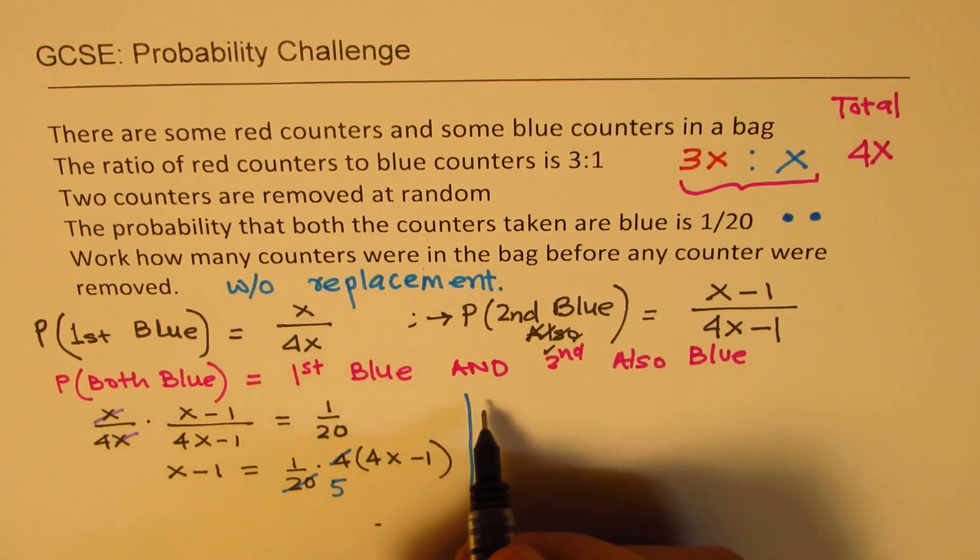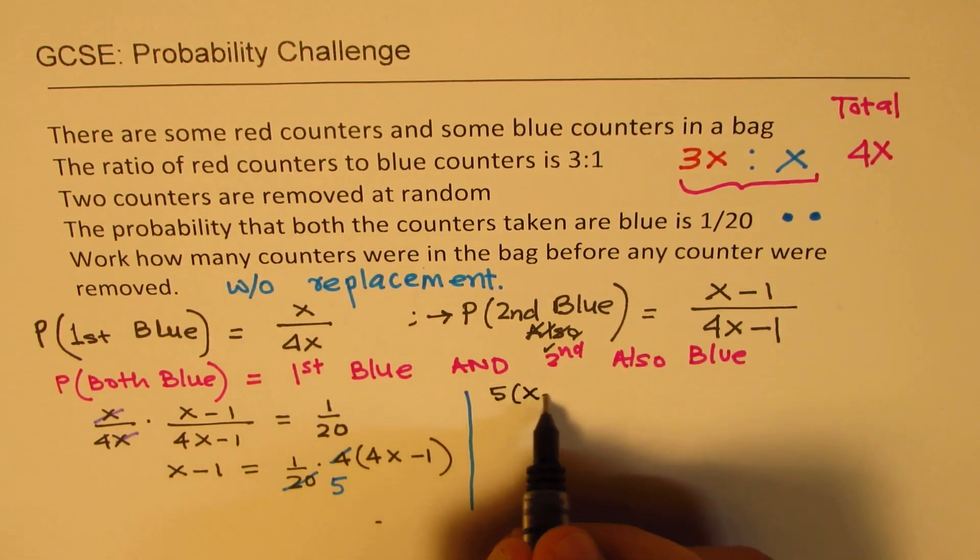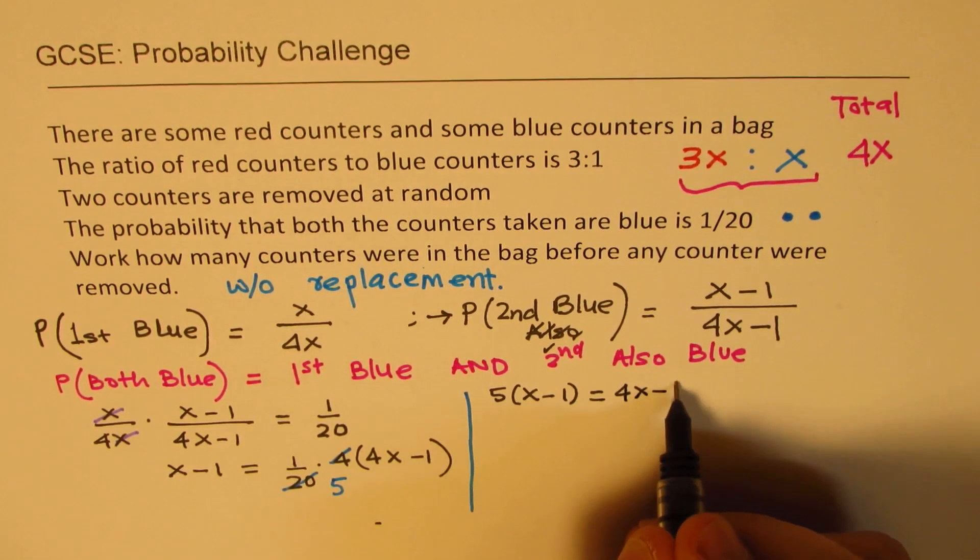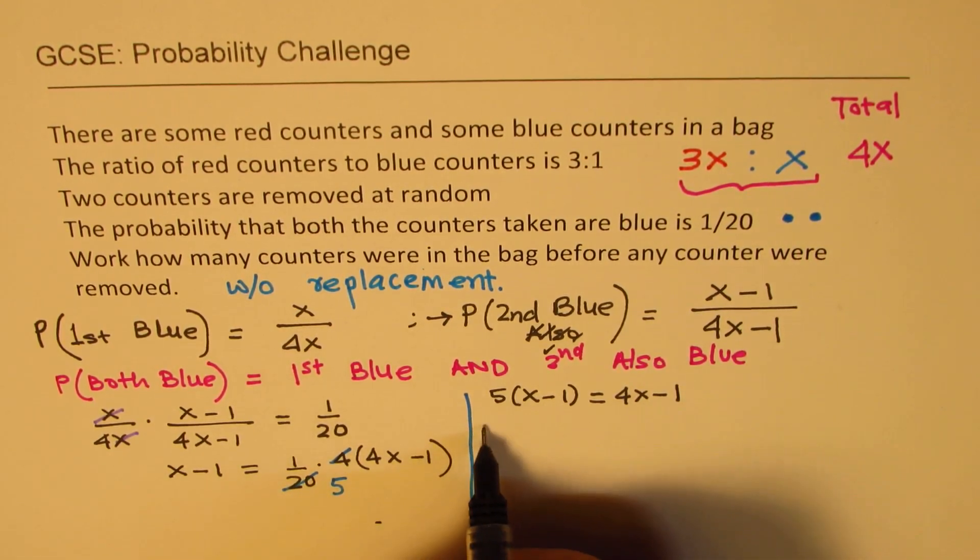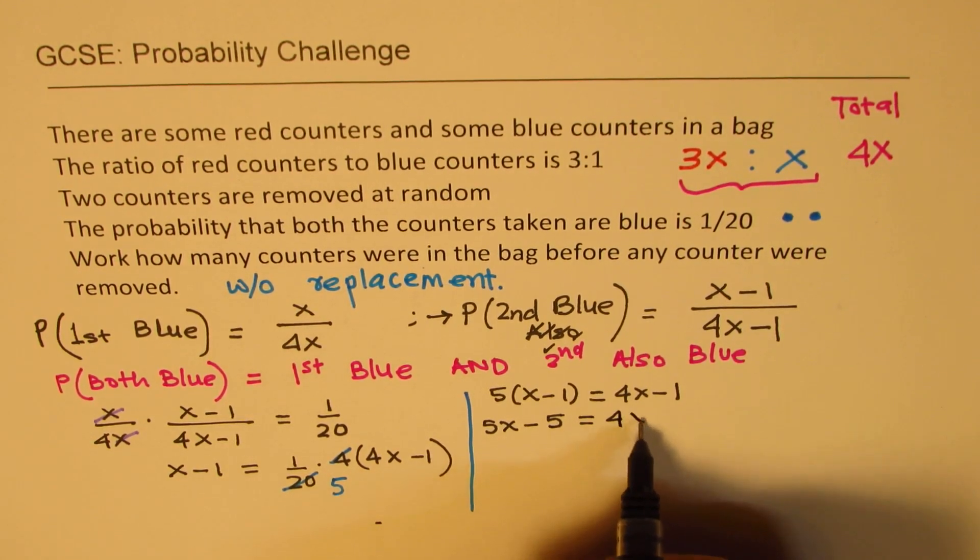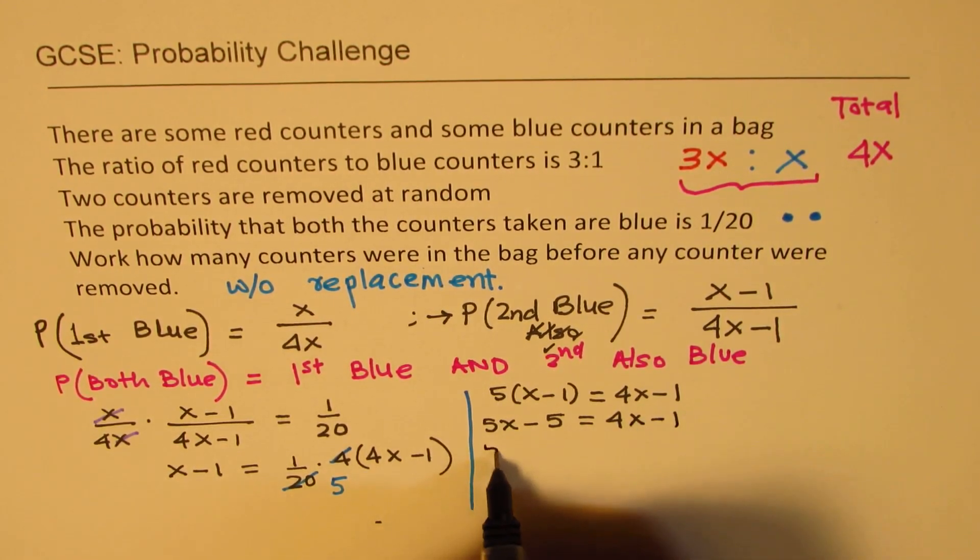Now we'll actually complete our cross multiplication and then solve the equation. So we get 5 times x minus 1 equals to 4x minus 1. Now in any test paper, it is always better to simplify and then find the answer.